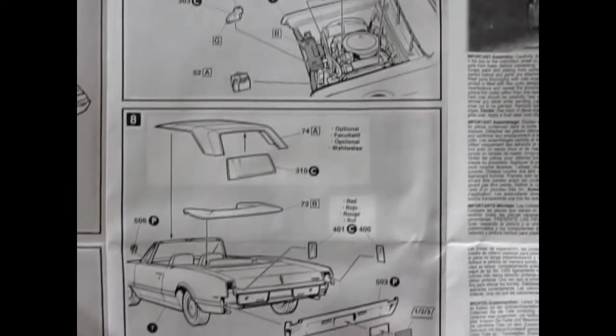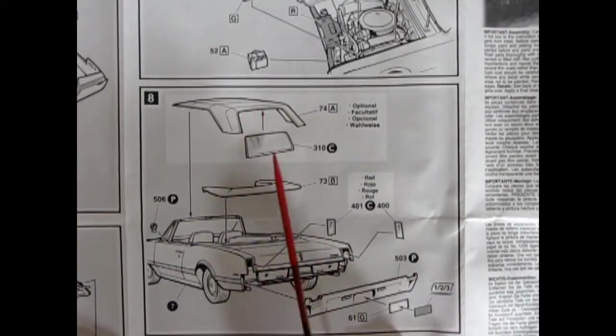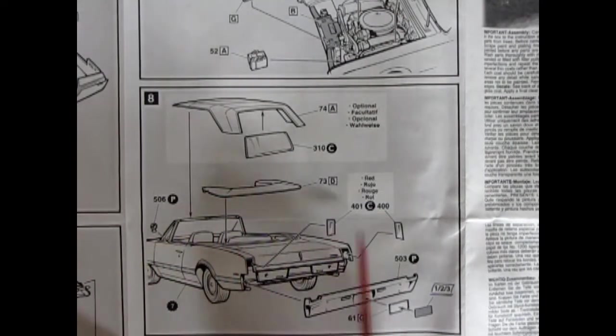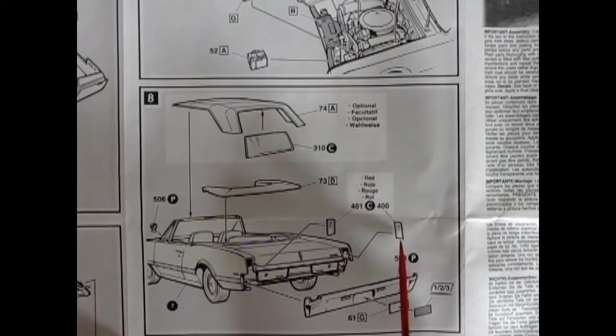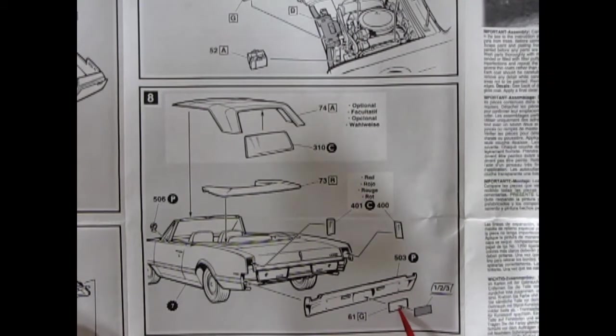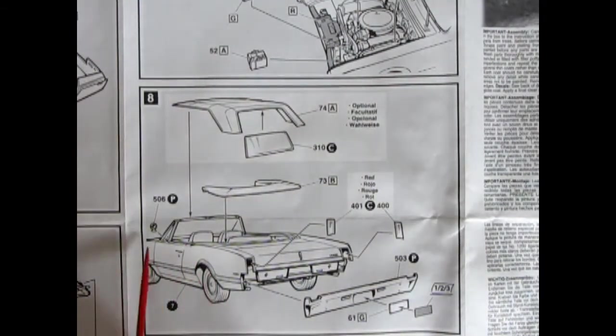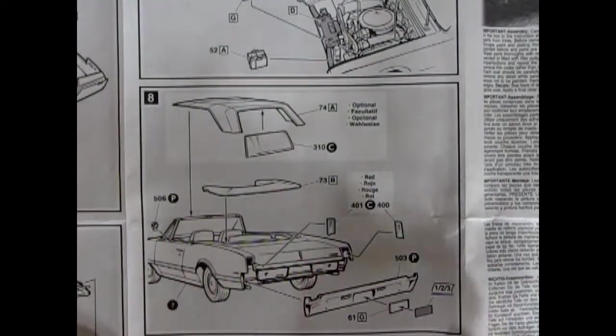And then we've got our nice convertible options. So you've got the top up with a separate piece of glass. Or the top folded down. There's our rear tail lamps going in. The bumper chrome bumper. And our license plate. And the decal for the license plate. So it all goes together. There's a rear view mirror sitting on the side as well.